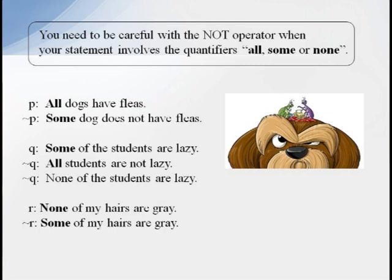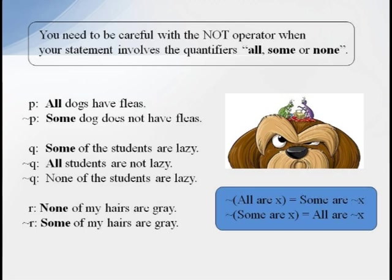You'll need to be a bit careful with the not operation when your statement uses quantifiers like all, some, or none. For instance, if your original statement is, all dogs have fleas, many people erroneously think that the negation is, no dogs have fleas. But if your statement is, all dogs have fleas, really all you have to do to disprove this is find some dog somewhere that does not have fleas. One single exception would be enough to dismiss the truth of this statement. So the correct negation would be, some dog does not have fleas. In general, the negation of an all statement will be a some statement, and the negation of a some statement will be an all statement.